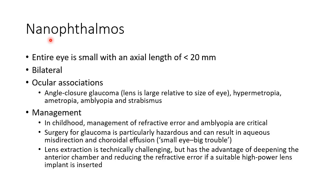Now let us discuss about nanophthalmos. In nanophthalmos, the entire eye is small with an axial length of less than 20 mm. It is usually bilateral. The ocular associations of nanophthalmos include angle-closure glaucoma, because the lens is large relative to the size of the eye. Other ocular associations include hypermetropia, ametropia, amblyopia, and strabismus.